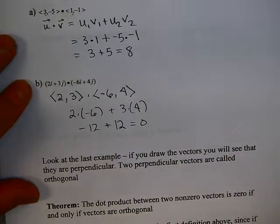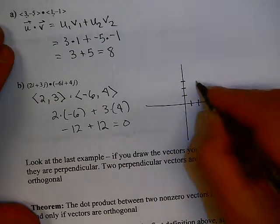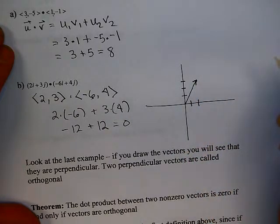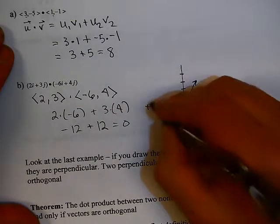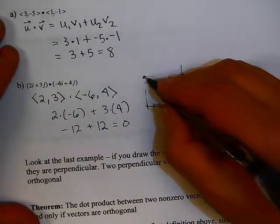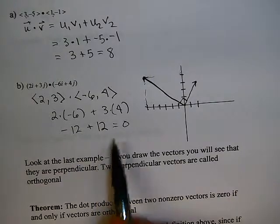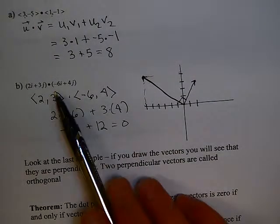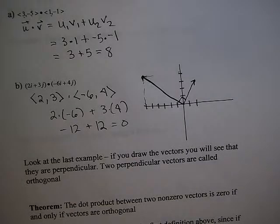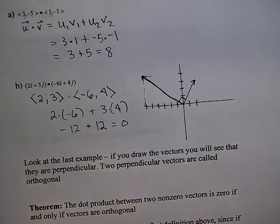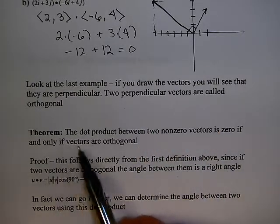If I draw these two vectors, (2, 3) and (negative 6, positive 4), it sure looks like these two vectors are perpendicular. And it turns out that's correct. One of the properties of the dot product is that if the dot product between two vectors is 0, then they are perpendicular. We use the word orthogonal to mean perpendicular when talking about vectors.